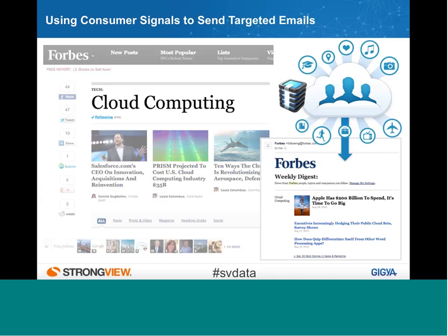Finally, another piece of data storage to think about is storing behaviors and on-site behaviors — things like comments, reviews, purchases, and shares. These are critical data points you can tie to a user's identity, and they can serve as signals to help drive relevancy in email and marketing campaigns. For example, with Forbes, if you track that a user viewed the cloud computing section, you can customize their weekly digest to include cloud computing content.